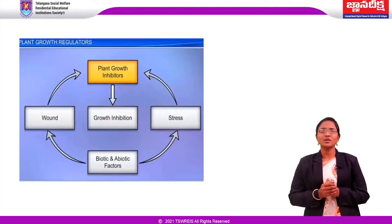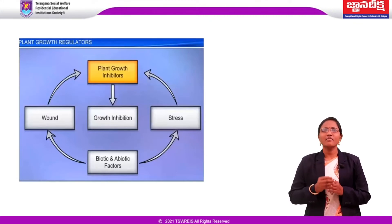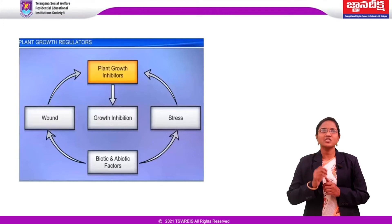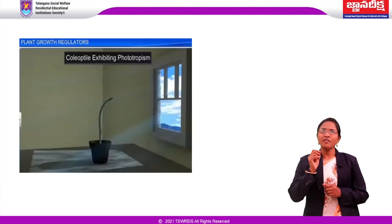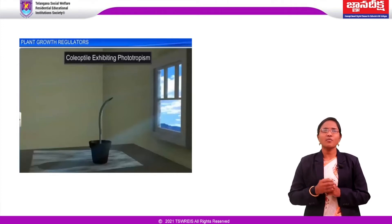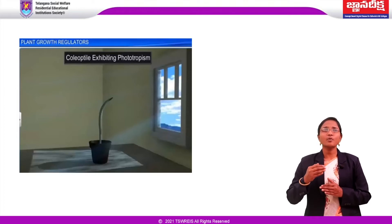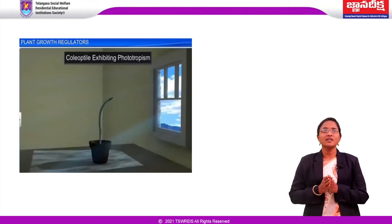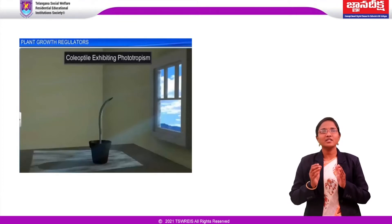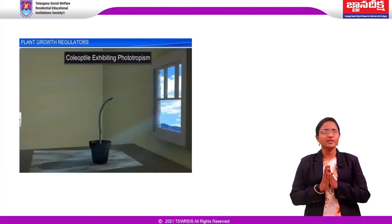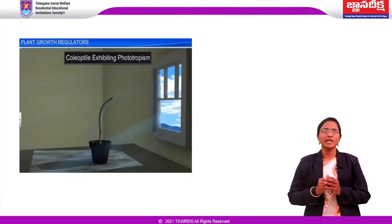Interestingly, the discovery of each of the five major groups of plant growth regulators has been accidental. Charles Darwin and his son Francis Darwin observed phototropism in coleoptiles of canary grass. Phototropism means responding to unilateral illumination by growing towards the light source. They concluded that the tip of the coleoptile was the site of a transmissible influence that caused the bending of the entire coleoptile. Auxin was isolated by F.W. Went from the tips of the coleoptiles of oat seedlings.